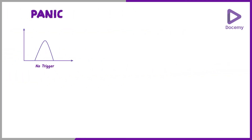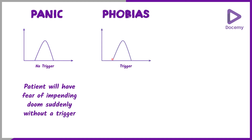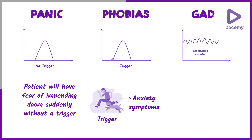Let's look at the diagram here. For panic disorders, there is no trigger — the patient will have fear of impending doom suddenly without any trigger. But in phobia, the patient will have a trigger and then will have anxiety symptoms; the trigger can be any animal or other stimuli. In generalized anxiety disorder, all throughout the day the patient will have a free-floating anxiety lasting for more than six months — it needs to be more than six months for diagnosis.